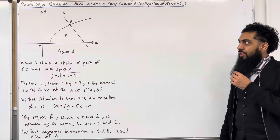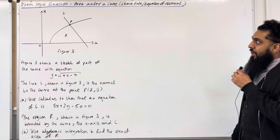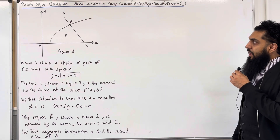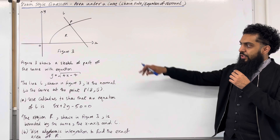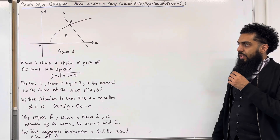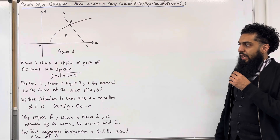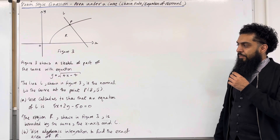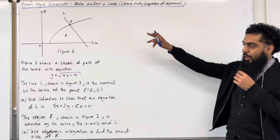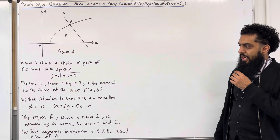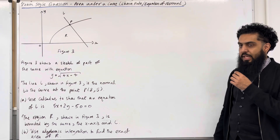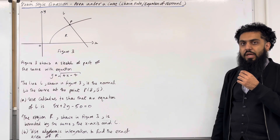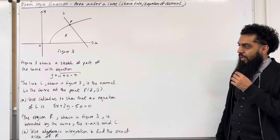Here is an exam question on area under a curve, chain rule, and equation of a normal. Figure 3 shows a sketch of part of the curve with equation y equals square root of 4x minus 7. The line L shown in figure 3 is the normal to the curve at the point P with x coordinate 8 and y coordinate 5.